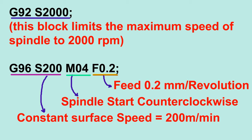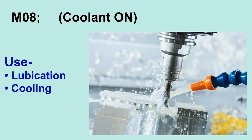Sometimes we also provide constant surface speed in meters per minute. In the next step we turn our coolant on with an M-code — for example, M08 — which serves the purpose of lubrication and cooling.